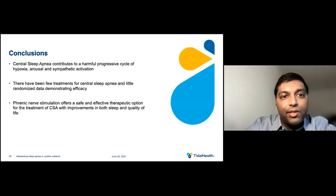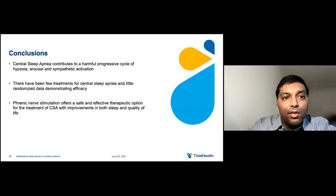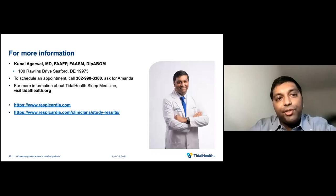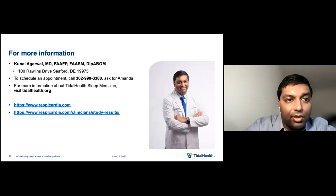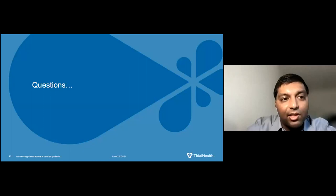In conclusion, central sleep apnea contributes to a harmful progressive cycle of hypoxia, arousal, and sympathetic activation. There have been few treatments for central sleep apnea and little randomized data demonstrating efficacy. Phrenic nerve stimulation offers a safe and effective therapeutic option for treatment of CSA with improvements in both sleep and quality of life. For more information, you can contact our office at 302-990-3300, ask for Amanda, or visit titlehealth.org. Respicardia also has information at respicardia.com. Thank you to Tidal Health and Respicardia for sponsoring this event.